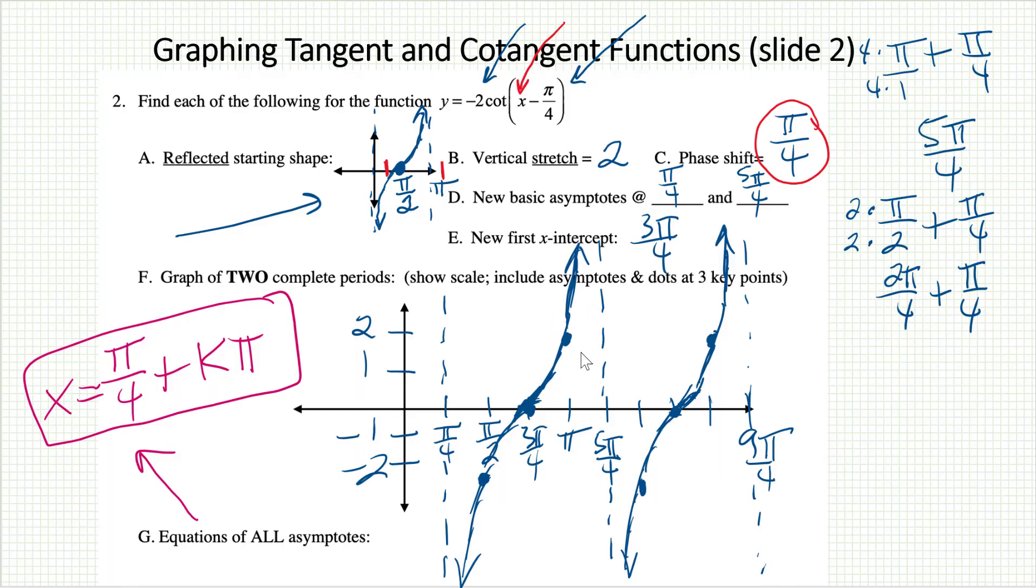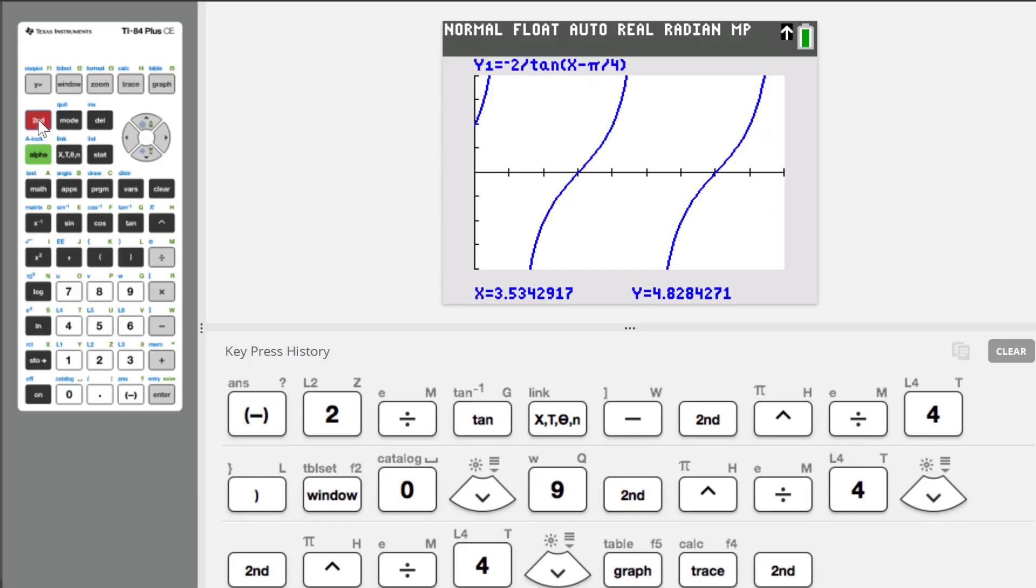One of the points we had on our graph was pi comma 2. I can check that as well. Go to trace, hit pi, hit enter. Sure enough, there it is. Pi comma 2. Our graph is verified.